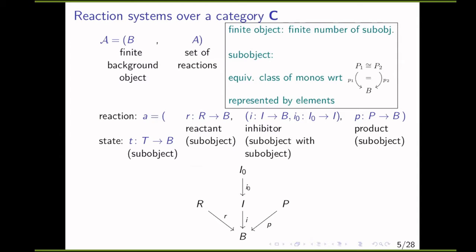We generalized this idea for reaction systems to be defined over categories. We consider a reaction system to be a pair consisting of a finite background object and a set of reactions. An object is finite if its number of sub-objects is finite, where a sub-object is defined as an equivalence class of monomorphisms. A reaction consists of a reactant, an inhibitor, and a product, where a reactant is a sub-object of B, an inhibitor is a sub-object of B with itself a sub-object, and the product is again a sub-object of B. A state is also a sub-object of B.